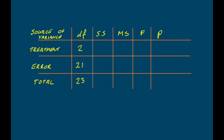We've already calculated the total sum of squares and the error sum of squares, so we can calculate the treatment sum of squares. The treatment sum of squares is 309.4 minus 134.8, which gives us 174.6.